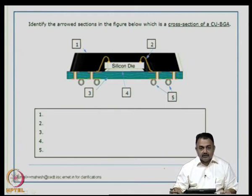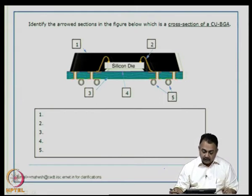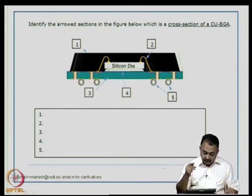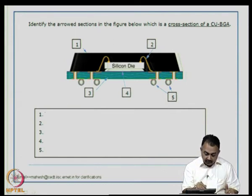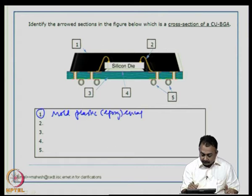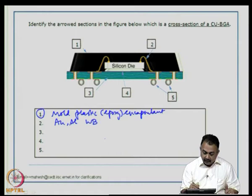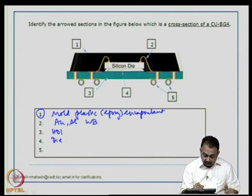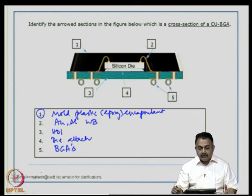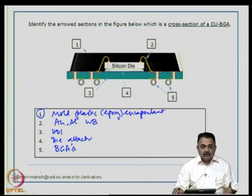Finally, another cross-section of a cavity-up ball grid array is identified: item 1 — mold/plastic/epoxy encapsulant; item 2 — wire bond (aluminum or gold); item 3 — HDI substrate; item 4 — die attach; item 5 — BGAs (solder balls). You can refer to textbooks and the web for more cross-sections and practice identifying components for various packages.